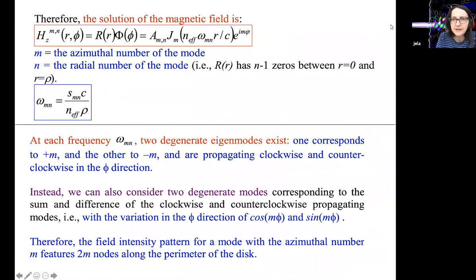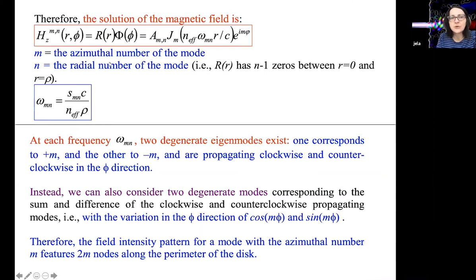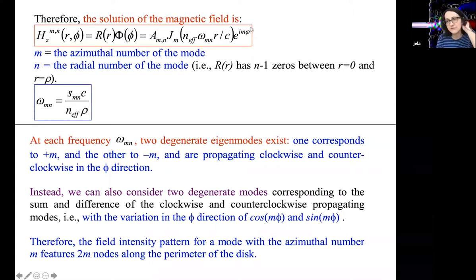A brief reminder of what we discussed last time. We used the whispering gallery mode approximation and effective index approximation to find the solution for the electromagnetic field inside the disk for whispering gallery modes. This is for TE-like modes — the distribution of electromagnetic field at the central plane of the disk where you only have TE polarization, magnetic fields along the axis of the disk, and electric field in-plane. For the TE MN mode, where M and N are azimuthal and radial numbers, you have this field distribution where J_M is the Bessel function of M-th order. E to the iMφ gives you the angular distribution, and M is the azimuthal number giving the number of antinodes along the edge of the disk. The radial number N gives the number of zeros in the radial direction. For each frequency there are two degenerate modes going clockwise and counterclockwise.